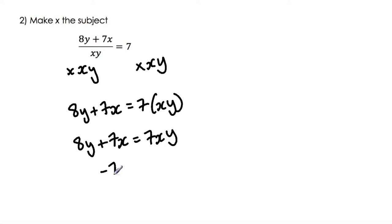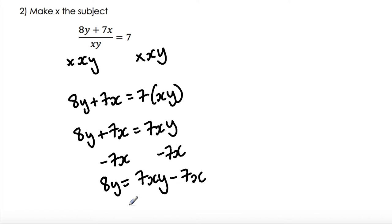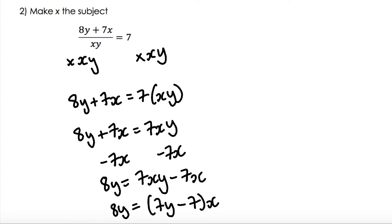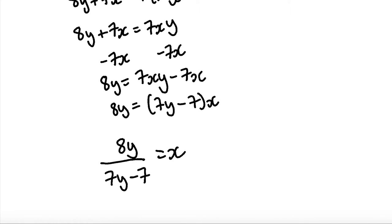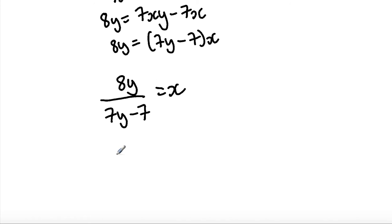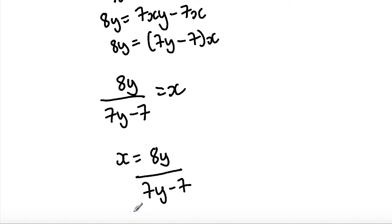I'm then going to subtract 7x from both sides, giving us 8y equals 7xy minus 7x. I'm then going to factorize the common variable x, so 8y equals (7y minus 7)x. I'm then going to divide both sides by 7y minus 7. So what we have is 8y over (7y minus 7) equals x. Rearranging, x is equal to 8y over (7y minus 7). And that's our final answer.